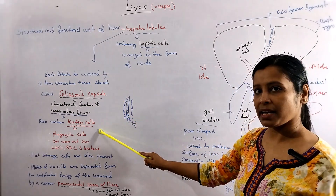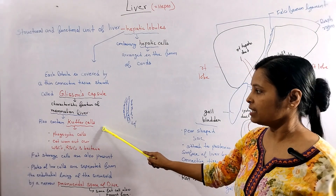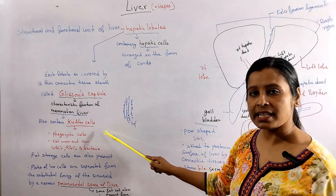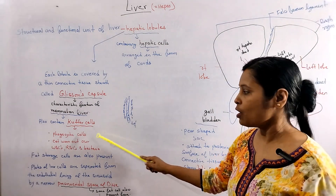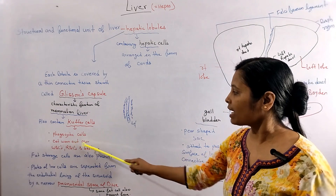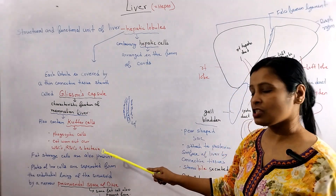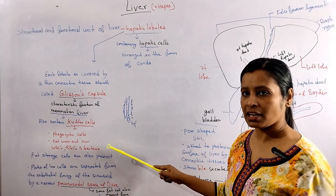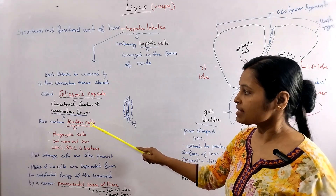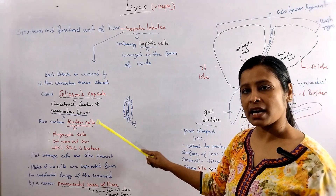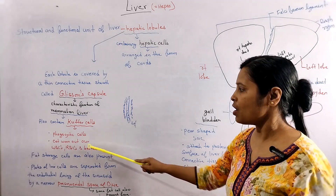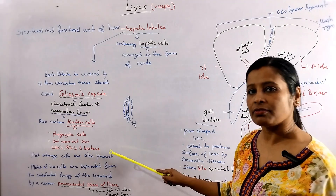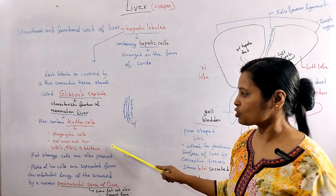In the mammalian liver, there are also cells called Kupffer cells. Kupffer cells are phagocytic cells. They engulf and destroy WBCs, RBCs, and bacteria.